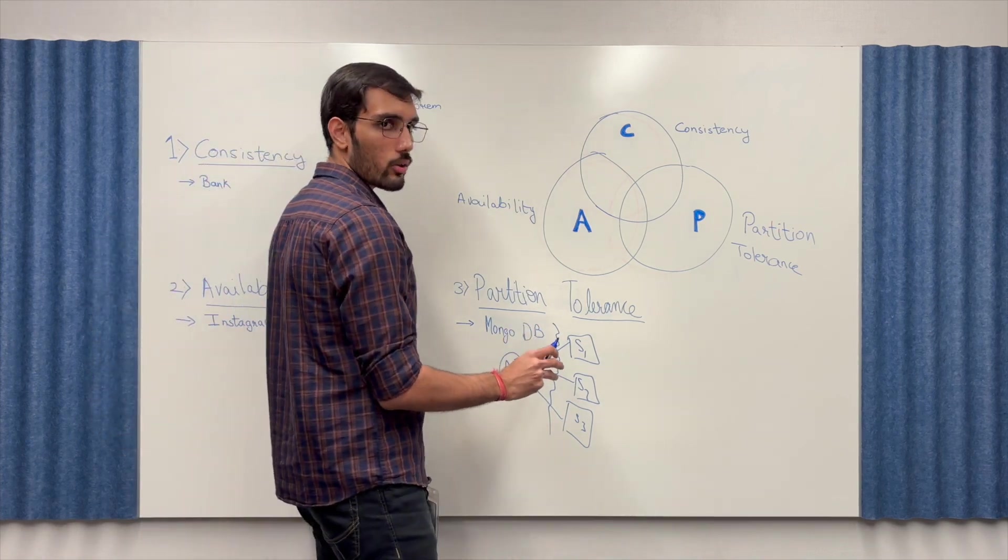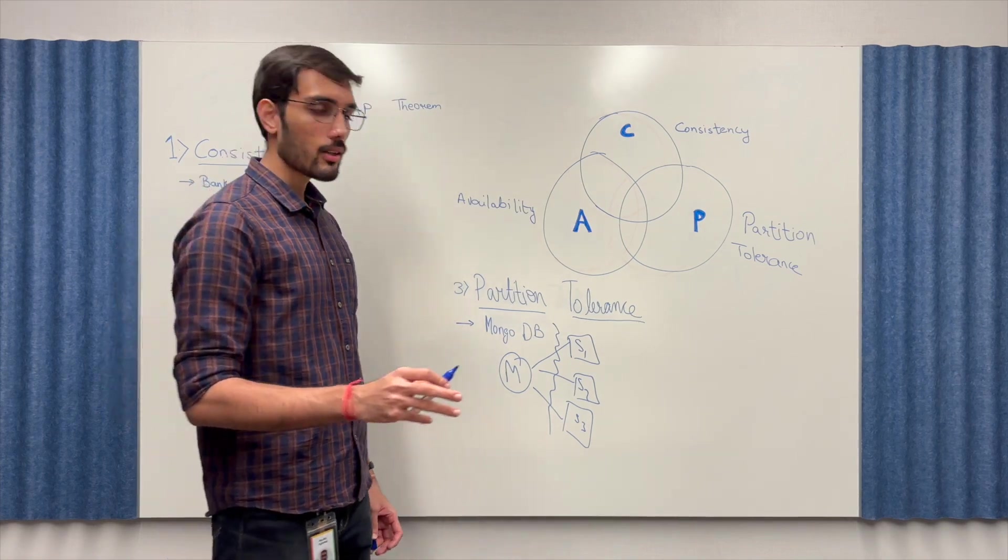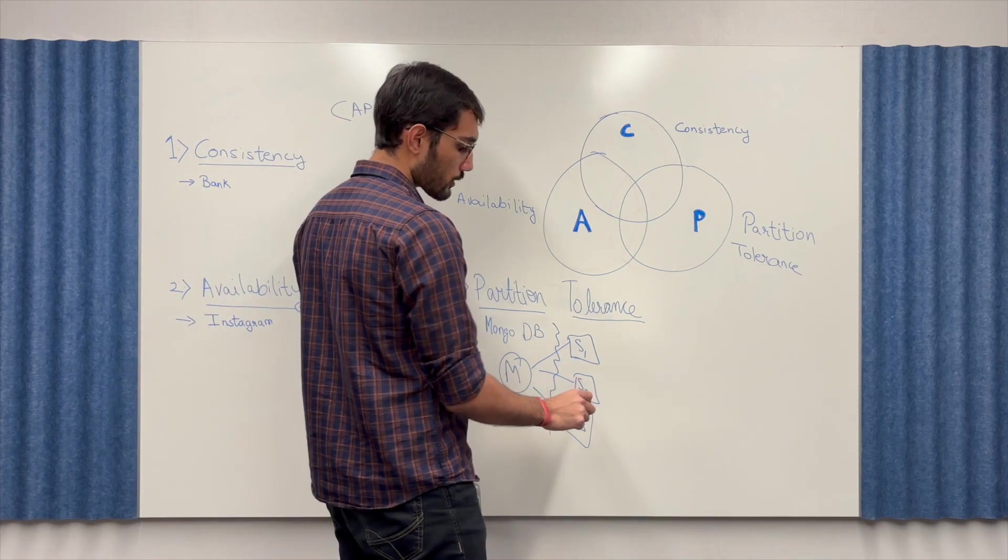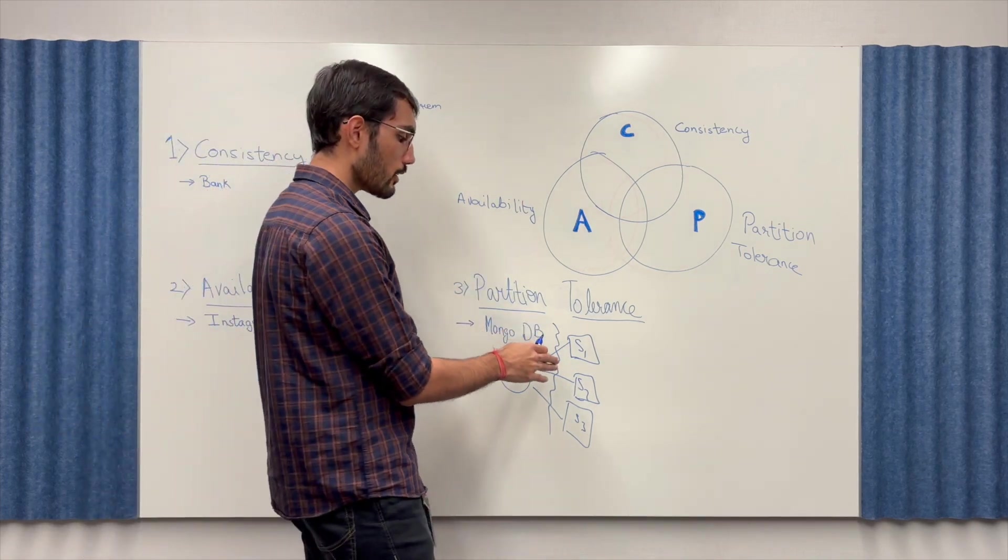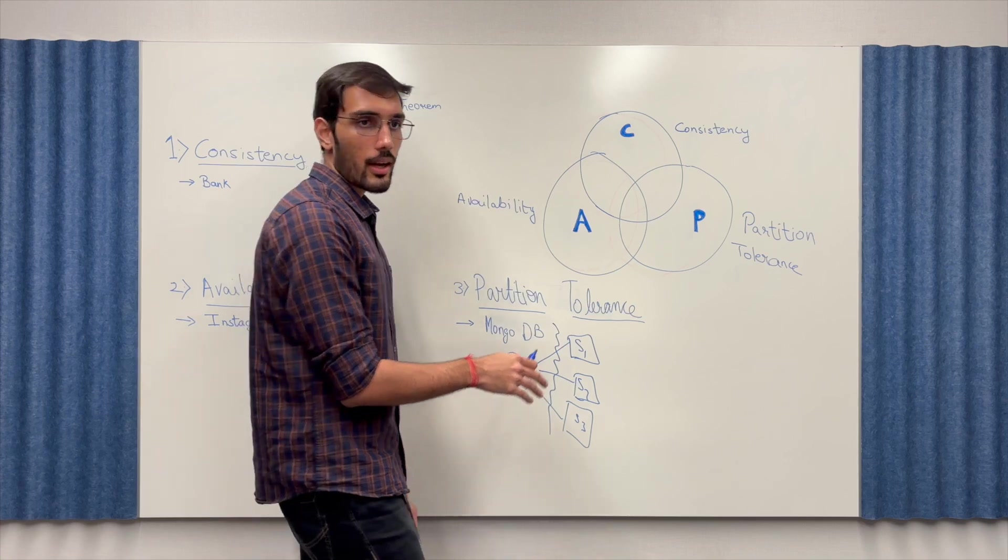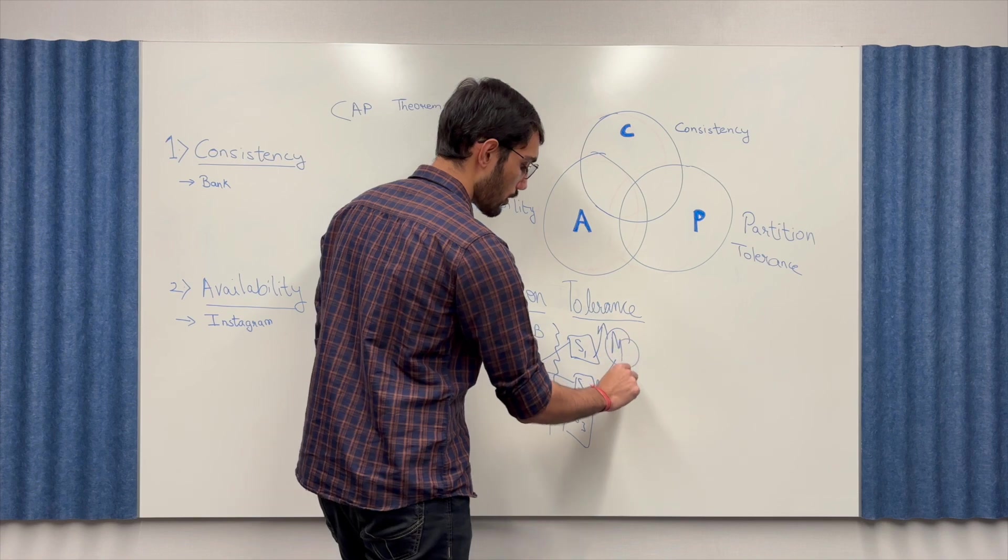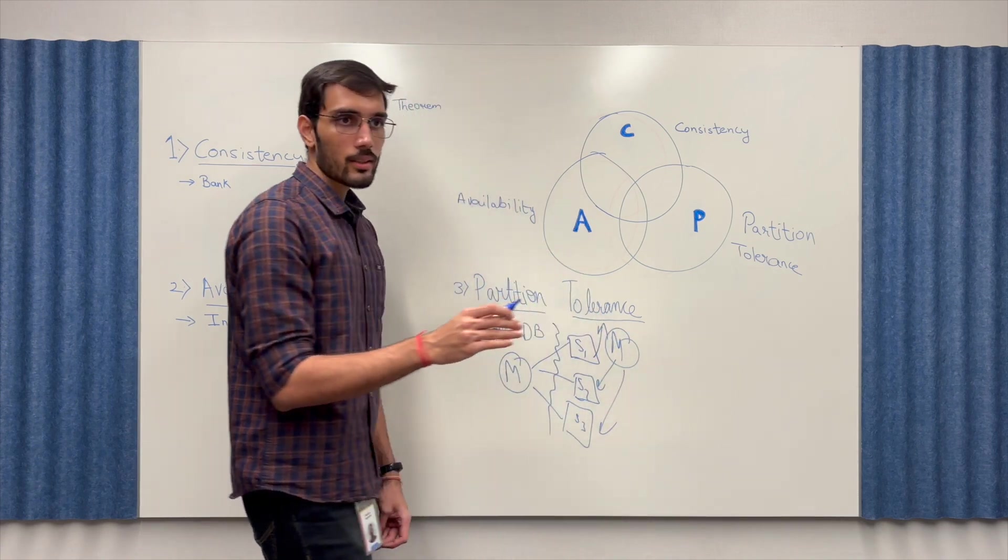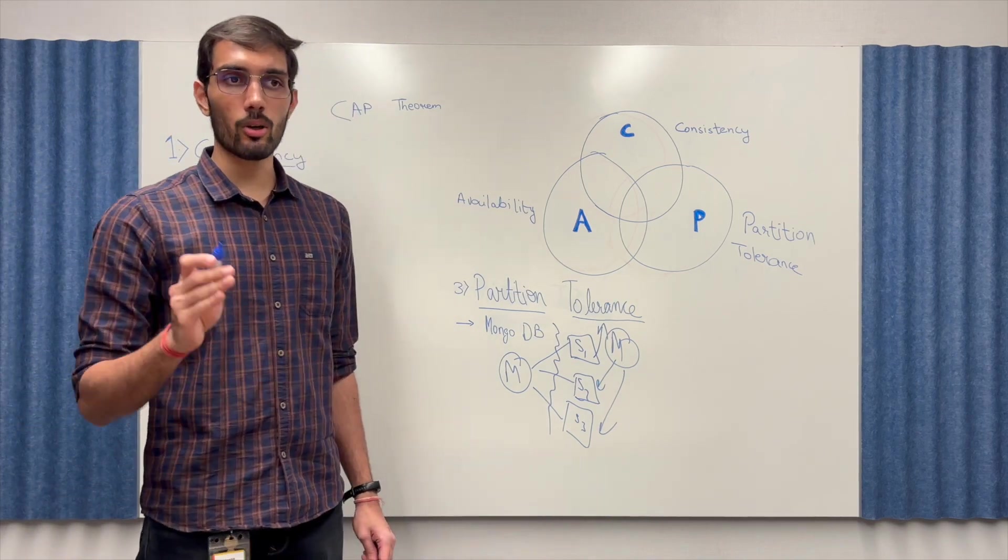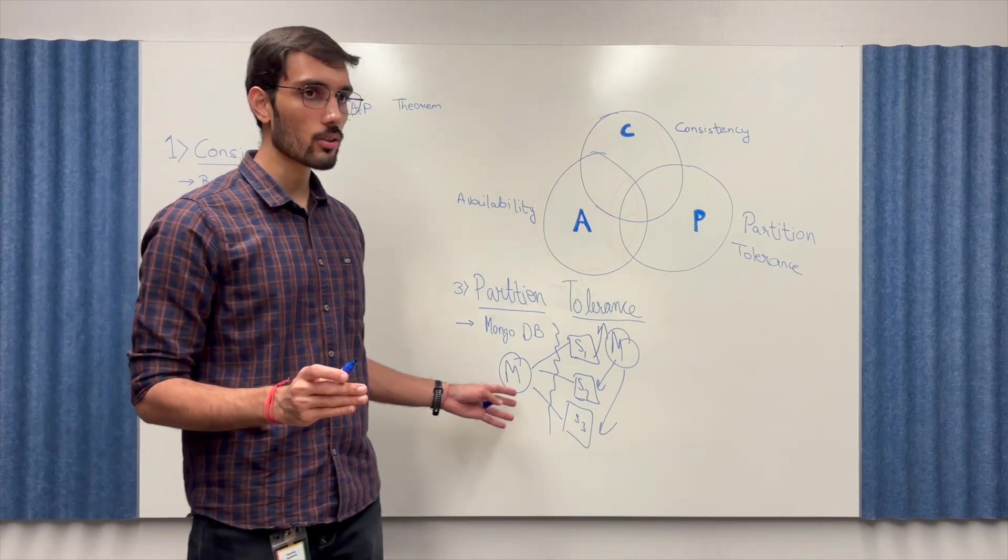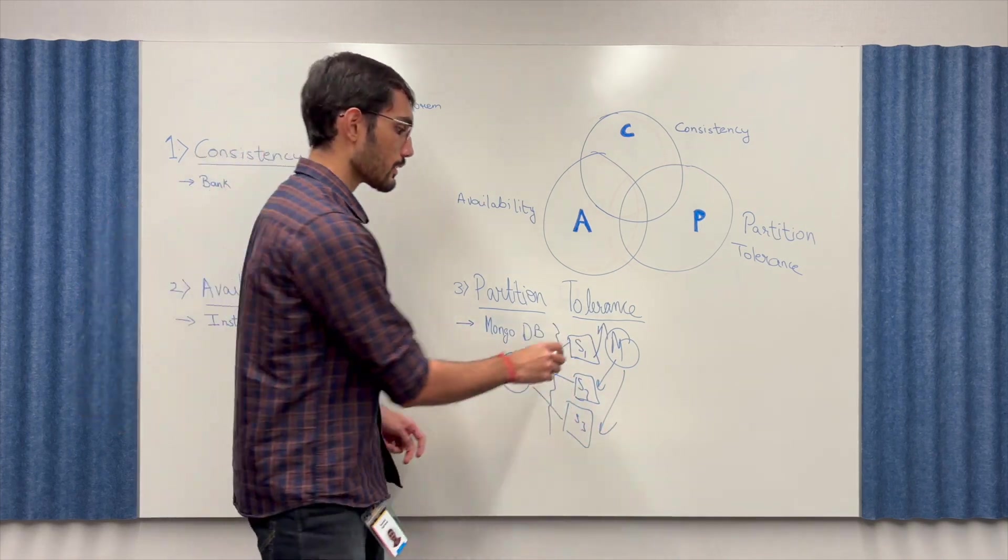Now what MongoDB does is it identifies that there is a partition in the network and now it checks the logs and sees which system or which slave has the latest data and then it upgrades the slave to a master and connects it to the other slaves. In between this there is a loss of availability for the system but it ensures that a system is auto recoverable and is partition tolerant and all reads will now be allowed via this new master's slave architecture.